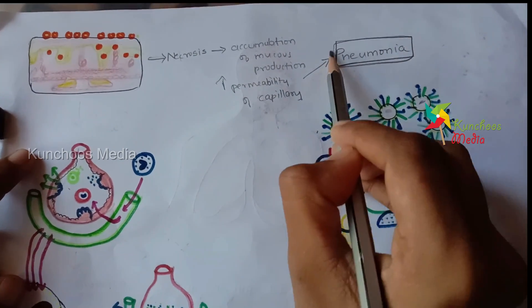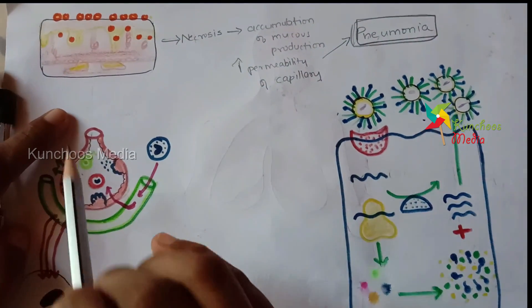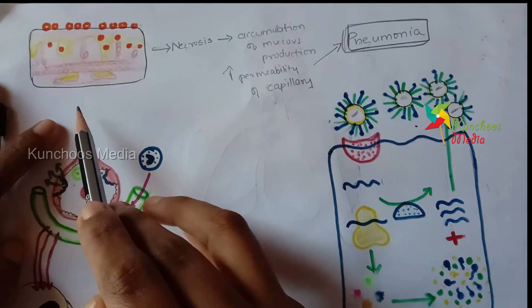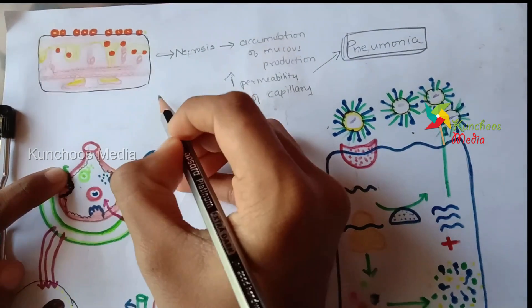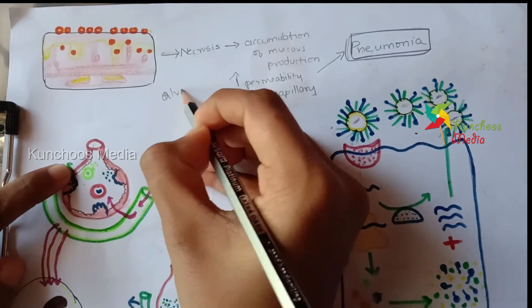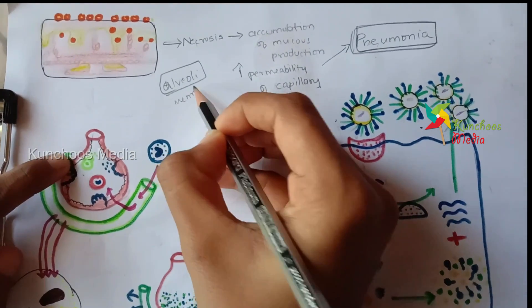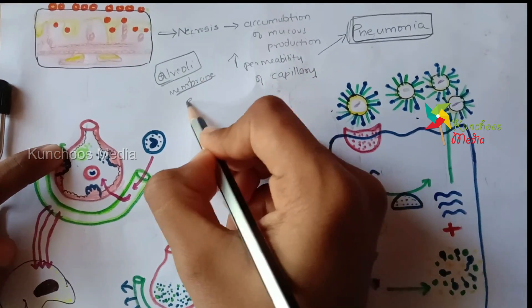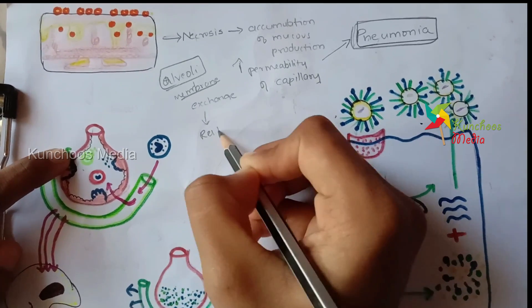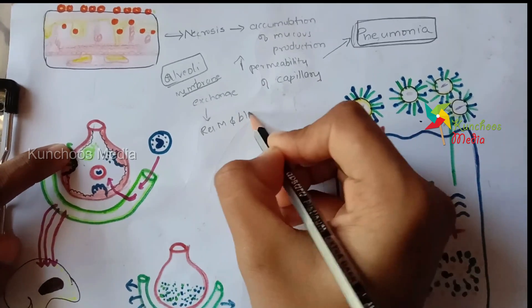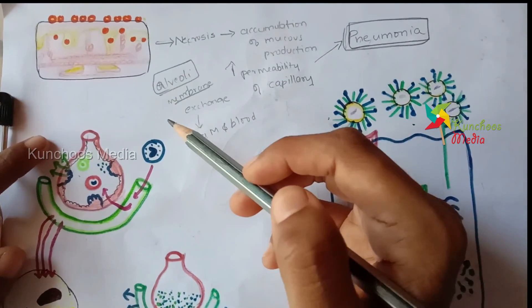Let's see specifically how pneumonia is caused by looking deeply into the structures of alveoli. Pneumonia is a condition where the air sacs get inflamed. The lungs have tiny air sacs called the alveoli, and these alveoli have alveolar membranes. These alveolar membranes are responsible for the exchange of gases between our respiratory membrane and our blood — giving out all the waste products and taking in oxygen and other useful substances.